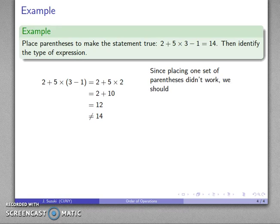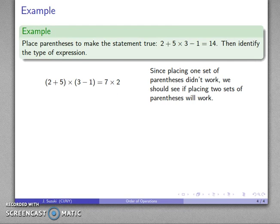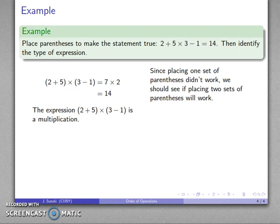So since placing one set of parentheses didn't work, we should see if placing two sets of parentheses works. So I'll throw them around the 2 plus 5 and I'll also throw them around the 3 minus 1. Parentheses say do stuff first, that's 2 plus 5 is 7, 3 minus 1 is 2, then multiplication 14, which is exactly what we want.